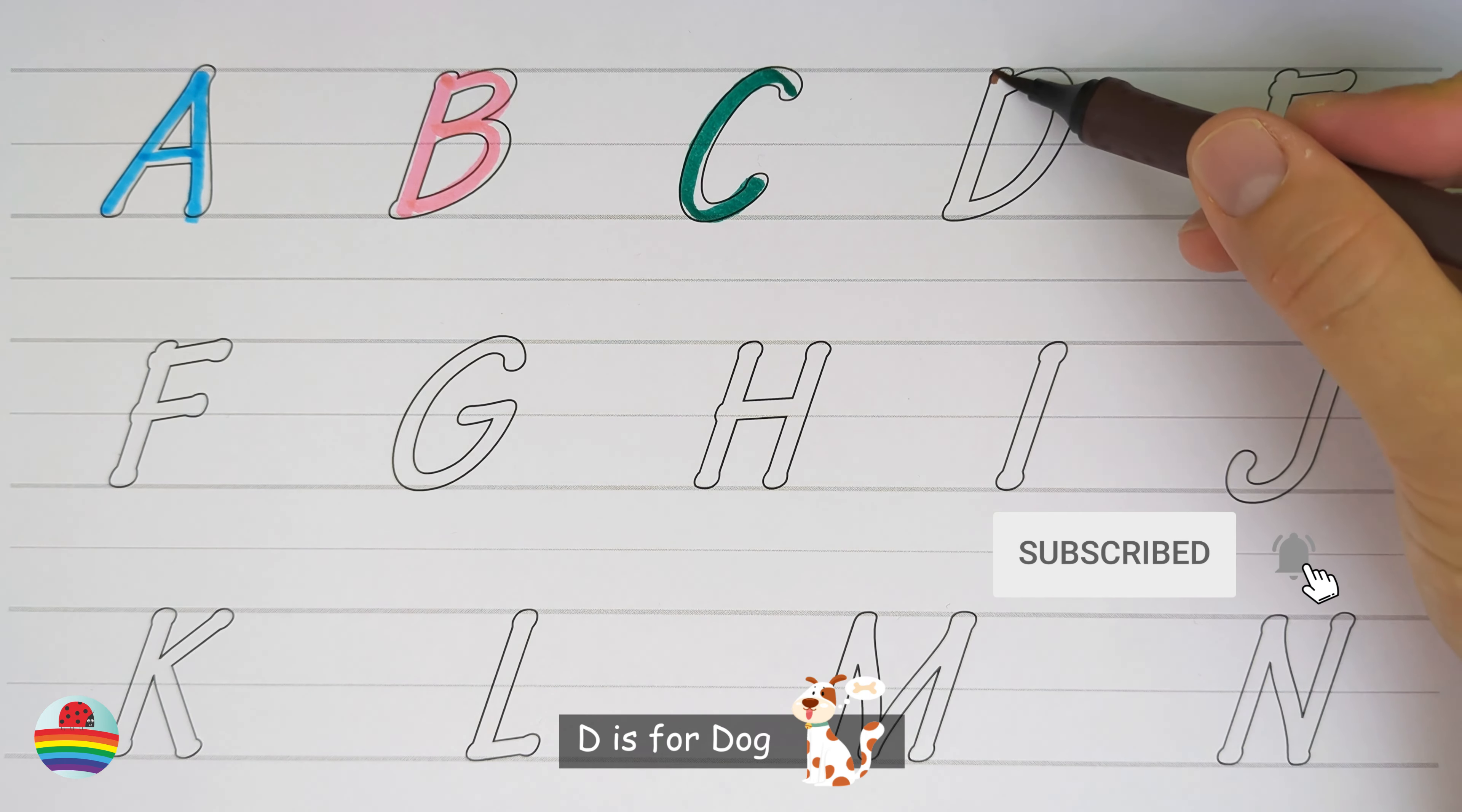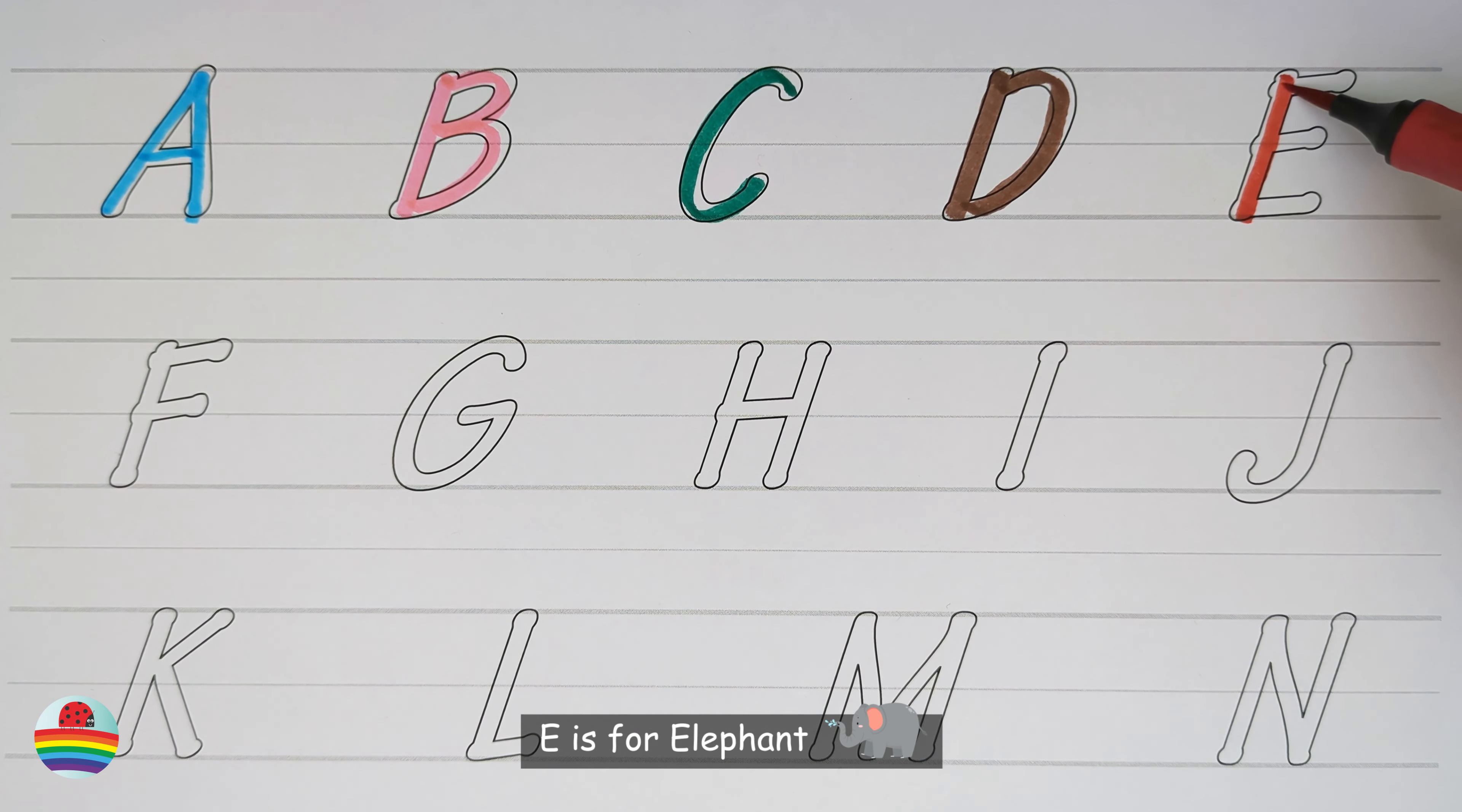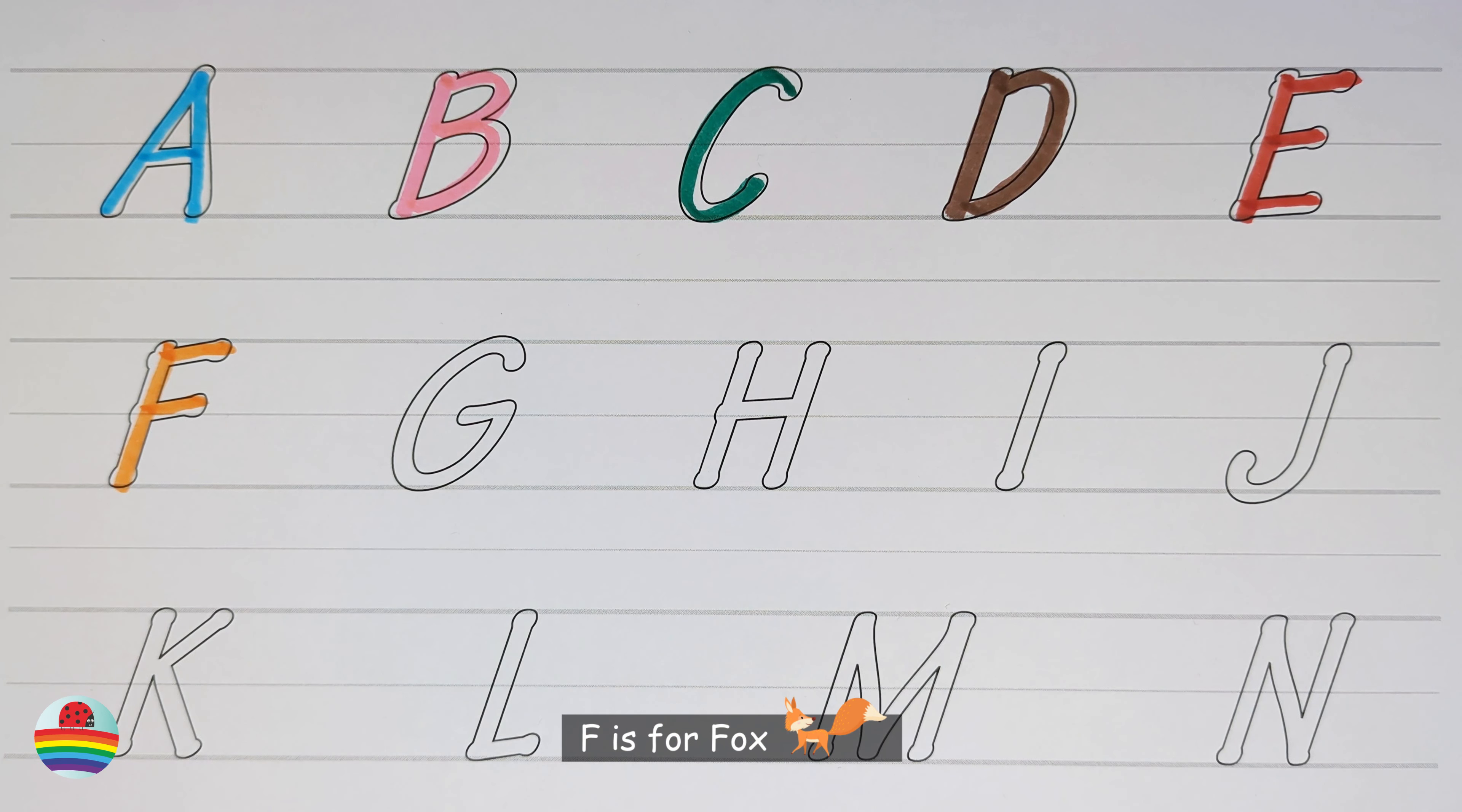D. D is for Dog. E. E is for Elephant. F. F is for Fox.